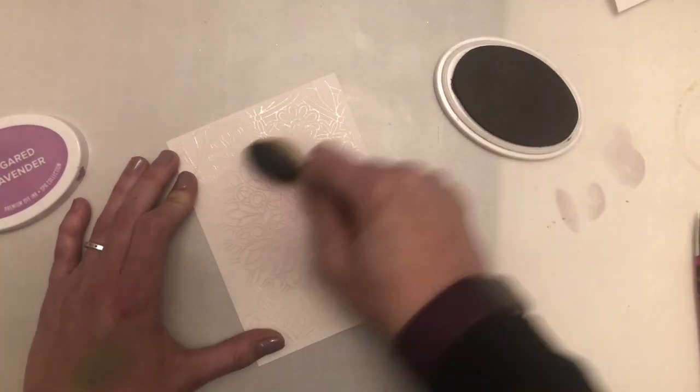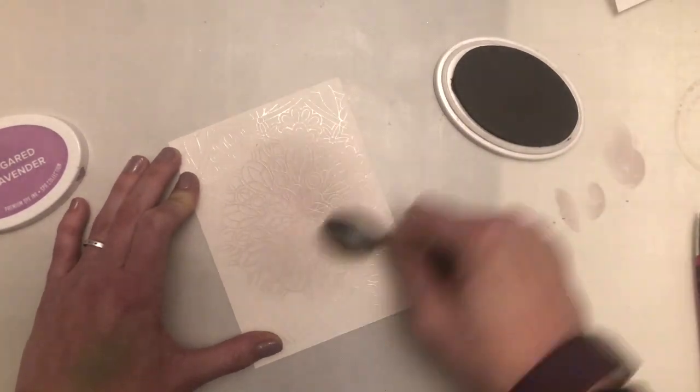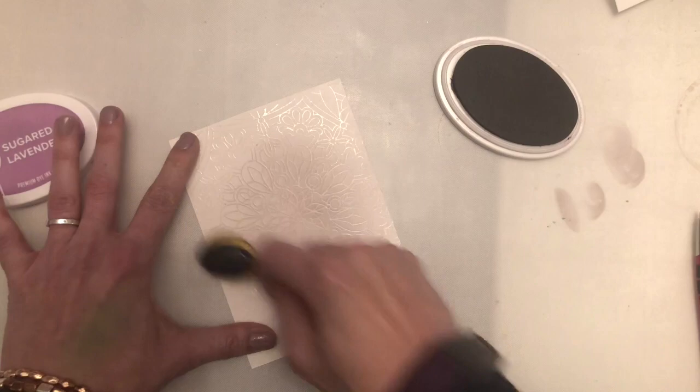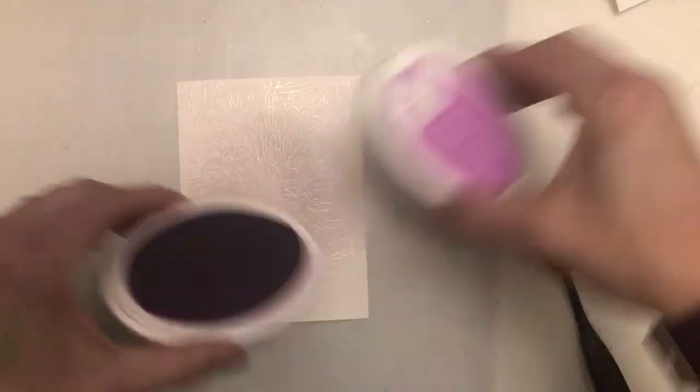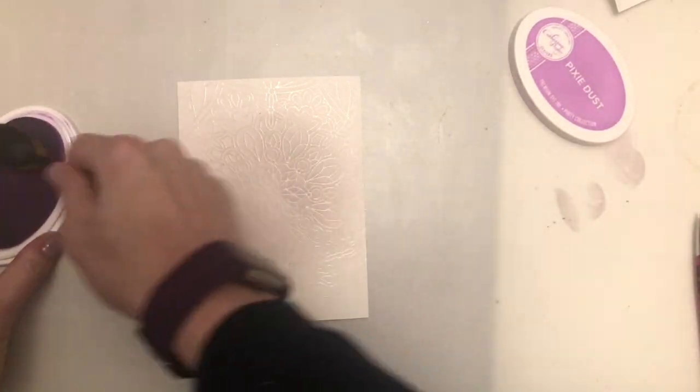I'm then using Catherine Pooler Ink in Pixie Dust and I'm using the same blender brush here, just taking it from the center again, blending out and then toning it down and blending it towards the edges.